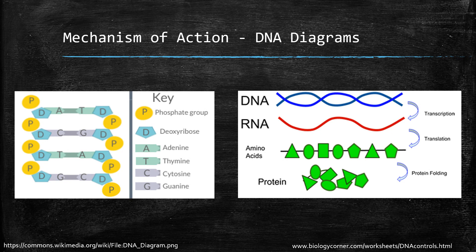Just briefly before we go into what azathioprine actually does, it's worth looking back at DNA structure - something we probably learned early on in medical school, pharmacy school, and even high school. If we look towards the right hand side we can see the DNA at the very top. The left hand picture is a diagram of the DNA. We've got the D's and P's on either side, which make up the helix - the backbone of the DNA, seen in blue. In between we see the nucleotide bases, made up of adenine, thymine, cytosine and guanine, which make up the code in the middle.